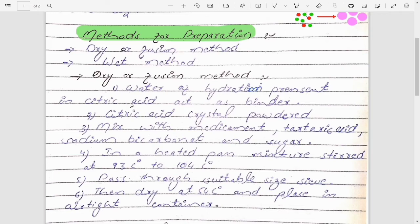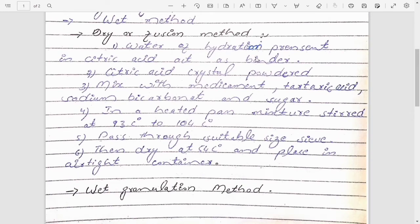Several steps in this process: first we have to reduce the size of the citric acid because citric acid is available in crystalline form. We will convert the citric acid into powder form, then we will mix the medicament, the tartaric acid, the sodium bicarbonate, the sugar, and the citric acid.